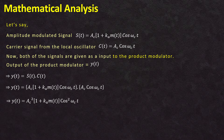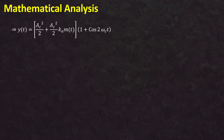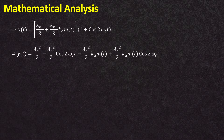Dividing and multiplying by 2, y(t) = (Ac²/2) × (1 + ka·m(t)) × 2cos²(ωc·t). Applying the identity 2cos²(ωc·t) = 1 + cos(2ωc·t), y(t) = (Ac²/2) × (1 + ka·m(t)) × (1 + cos(2ωc·t)). Expanding this gives y(t) = Ac²/2 + (Ac²/2)·ka·m(t) + (Ac²/2)·cos(2ωc·t) + (Ac²/2)·ka·m(t)·cos(2ωc·t).